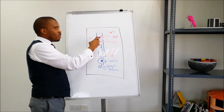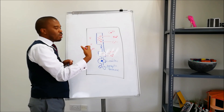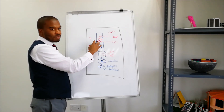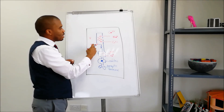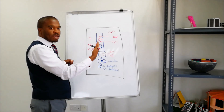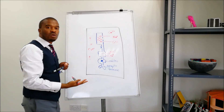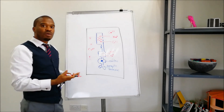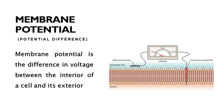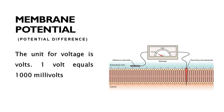The concentration of ions inside of the cell can cause the cell to be either more positively charged or more negatively charged. The difference in the concentration of ions inside of the cell and in the surrounding extracellular fluid is what we call the voltage or the membrane potential of the cell. Membrane potential can therefore be defined as the difference in voltage between the interior of a cell and its exterior. The unit for voltage is volts; however, the value of membrane potential is usually given in millivolts. One volt equals 1000 millivolts.